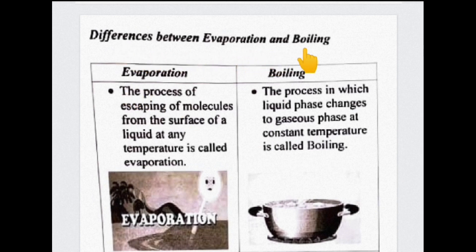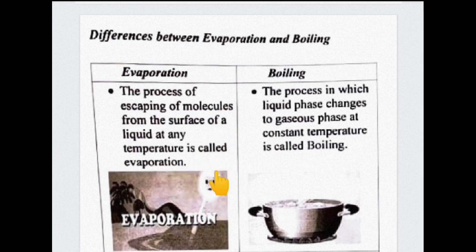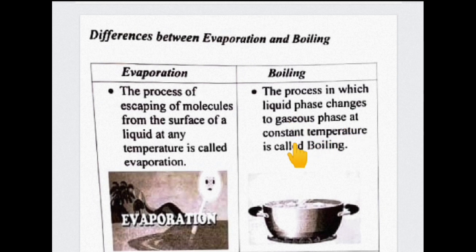Let's look at the difference between evaporation and boiling. Evaporation is the process of molecules escaping from the surface of the liquid at any temperature — for example, on a hot sunny day we can see the ocean surface as a phenomenon. Now, if we take a bowl, put water in it, and heat the water to 100 degrees centigrade, then we will see water molecules in each and every part of the liquid boiling, and we can see bubbles forming.